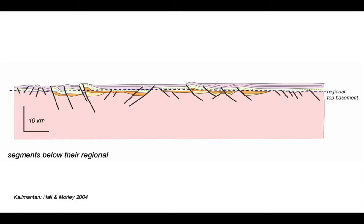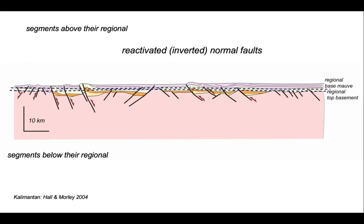Let's put on another regional, this time for the base of the Miocene unit. And we can see that in places along this profile, the base of the Miocene unit has been uplifted above its regional. We can interpret this as inferring that the faults have got a polyphase history, that they are reactivated normal faults.